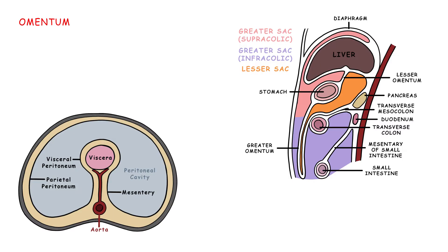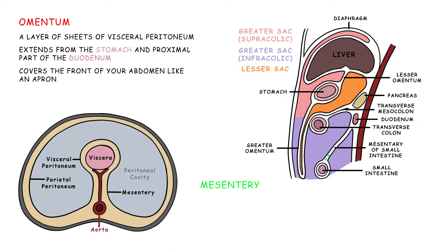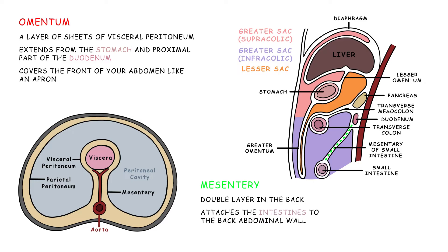The omentum, a layer of sheets of visceral peritoneum, extends from the stomach and proximal part of the duodenum and covers the front of the abdomen like an apron, while the mesentery, a double layer in the back, attaches the intestines to the back abdominal wall.